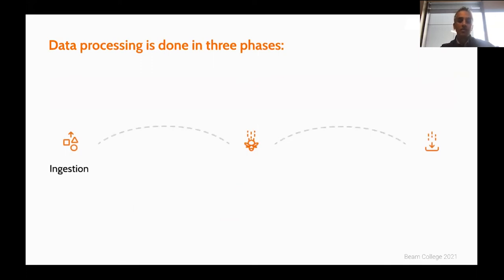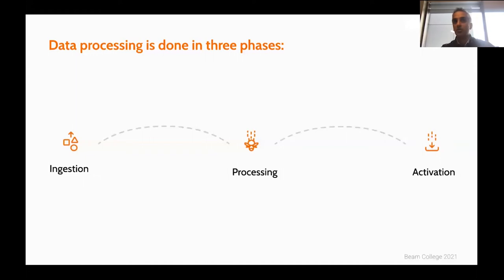Data processing is done in three phases: you ingest it from the sources, you process it, and then you activate it. You can do activation by real-time interactive dashboards, or by applying machine learning models in real time to your systems. Data processing is really important for going from source to sink, transforming data along the way to get insights and what we think of as action.